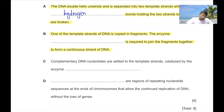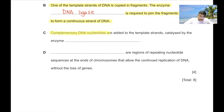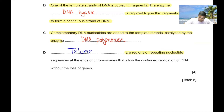The enzyme DNA polymerase is required; the enzyme DNA ligase is needed to join the fragments together to form a continuous strand of DNA. DNA ligase forms the phosphodiester bond. Complementary DNA nucleotides are added to the template strand, catalyzed by the enzyme DNA polymerase. Telomeres are regions of repeating nucleotides.